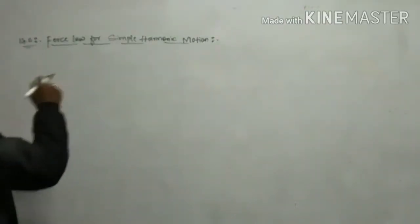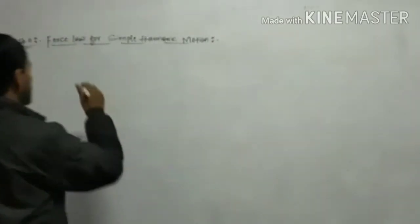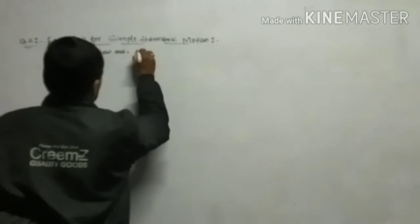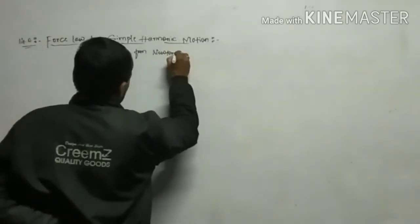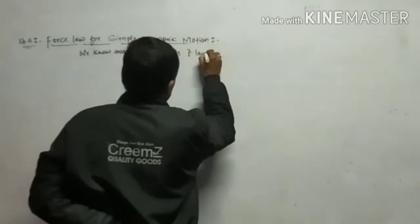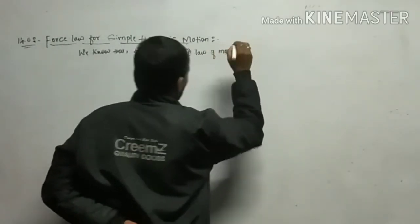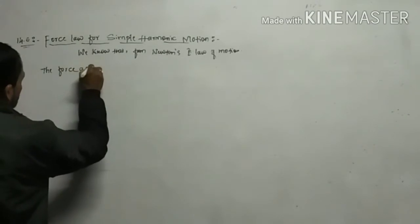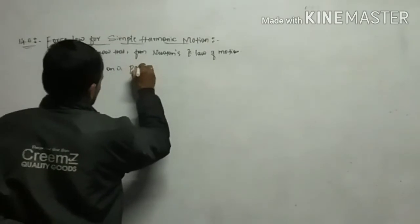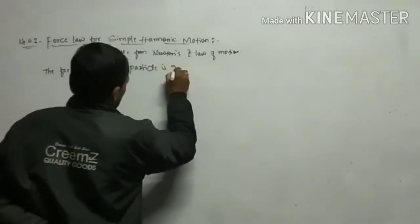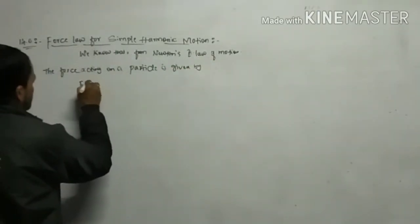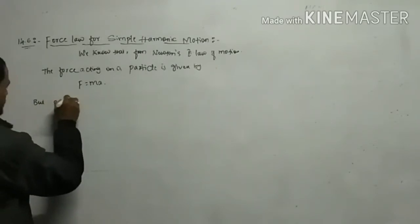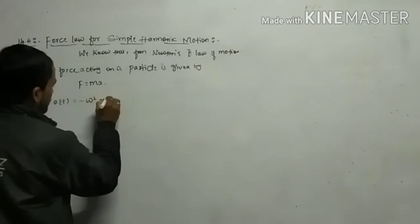What is the value of force in SHM is what we study in today's topic. We know that from Newton's second law of motion, the force acting on a particle is given by F = m × A. And A(t) is equal to minus omega squared x(t).